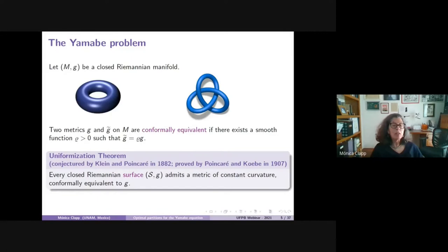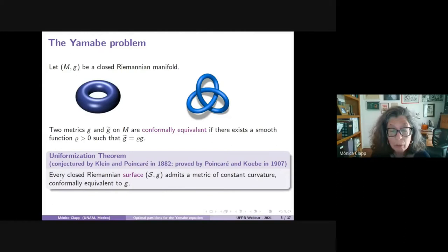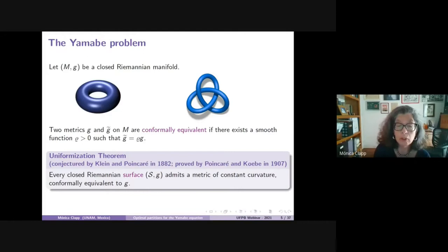There is a famous classical result called the uniformization theorem. For surfaces, that is manifolds of dimension two, it is classical that one always admits a metric conformally equivalent to the given metric g such that the curvature is constant. This result was proved by Poincaré and Koebe more than 100 years ago.